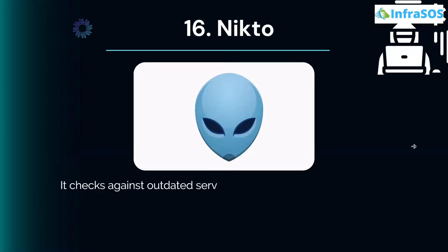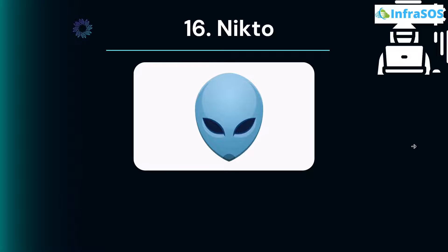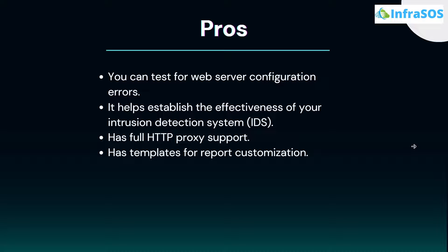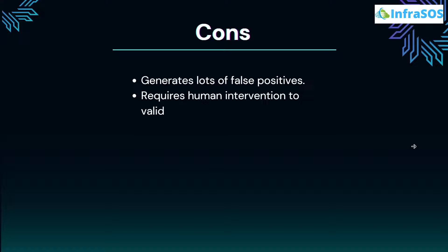At number 16 we have Nikto. Nikto checks against outdated server software and dangerous files and programs. You can also use Nikto to check configuration errors that could potentially lead to attacks, and it lets you discover website or web server information that you can exploit further. Major pros include testing for web server configuration errors, helping establish the effectiveness of your intrusion detection system (IDS), full HTTP proxy support, and templates for report customization. Cons include generating a lot of false positives and requiring human intervention to validate checks.